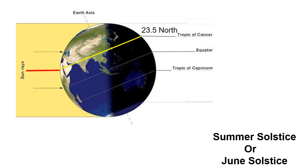There are two solstices each year: the summer solstice and the winter solstice. The summer solstice, also known as the June solstice, is the time of the year when the tilt of the Earth's axis is most inclined towards the sun, resulting in the longest day and shortest night of the year in the northern hemisphere, and vice versa in the southern hemisphere.